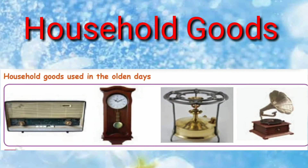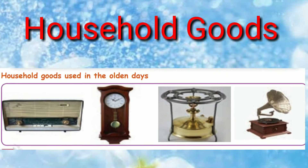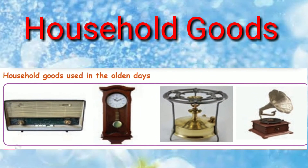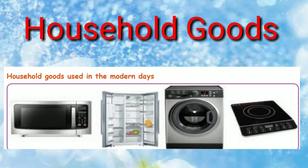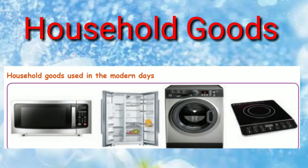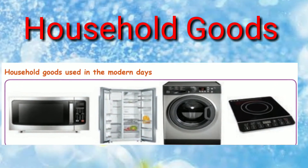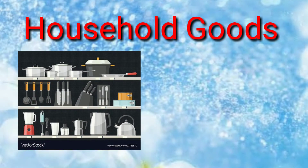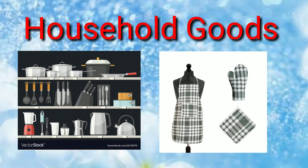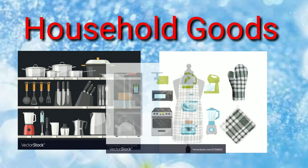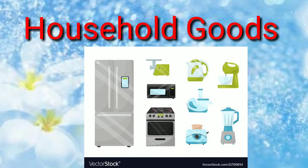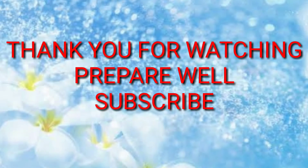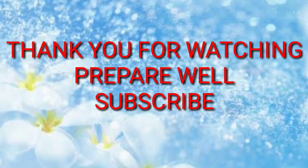Next is the topic household goods. These are the products that we use in our houses. Goods that are found in your house permanently are called household goods. Some household goods are furniture, kitchenware, clothes, towels, bedding, boots, and electronic goods.